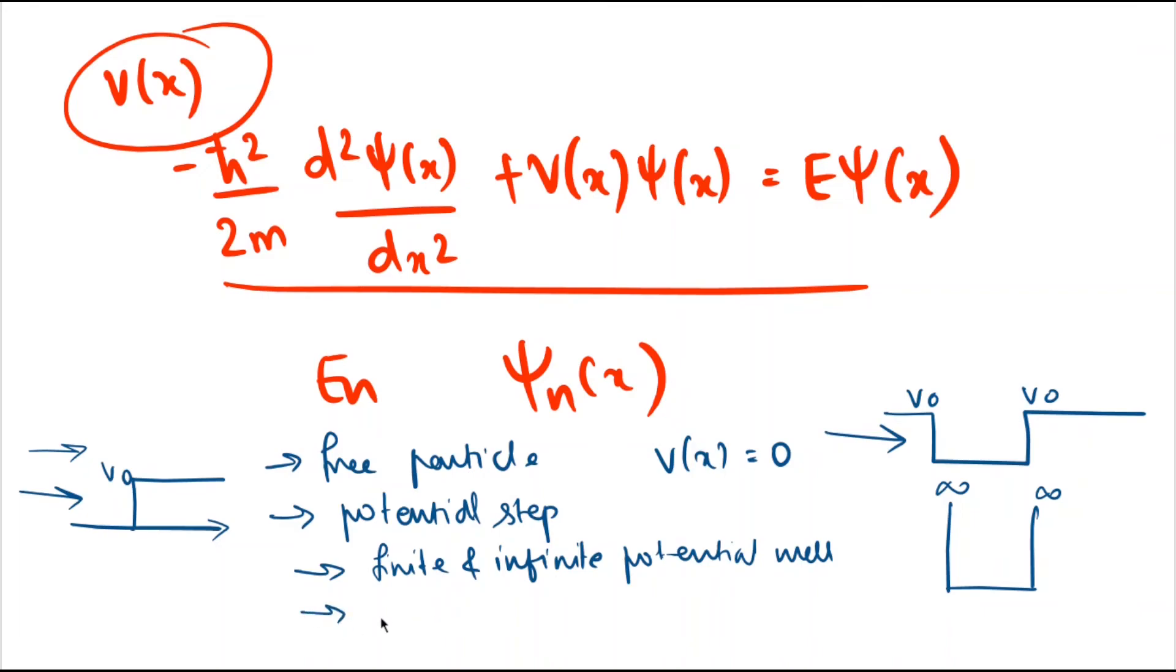The last one is the harmonic oscillator. For the harmonic oscillator, the potential may look like this, where these are the discrete energy levels of our harmonic oscillator for different values of n.